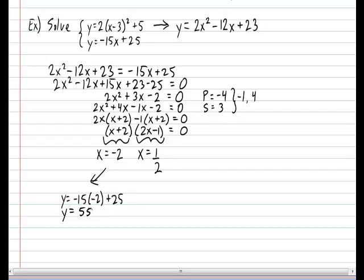Now let's do the second x value. So again, to keep things simple, I'm going to keep using the linear rule. So y equals minus 15 times 1 half plus 25, thereby giving me a y value of 17.5.